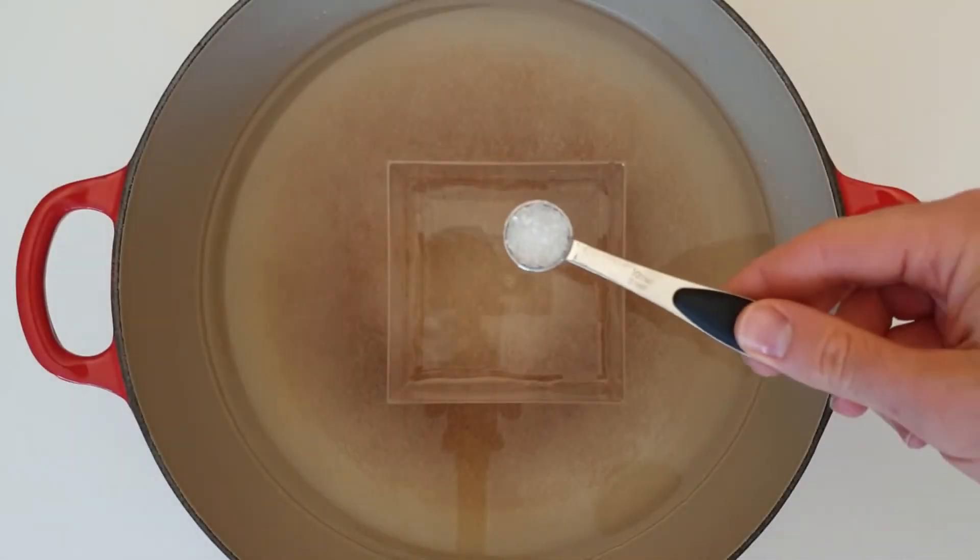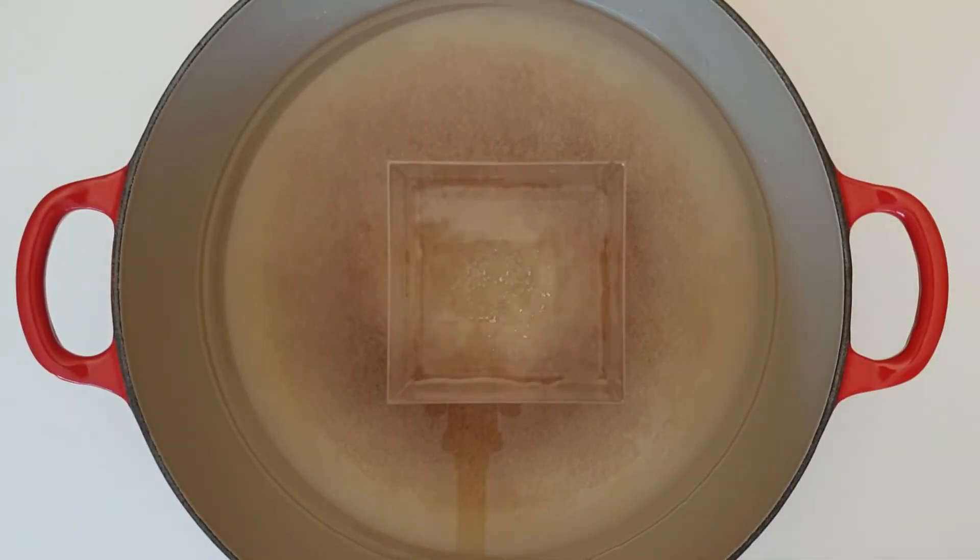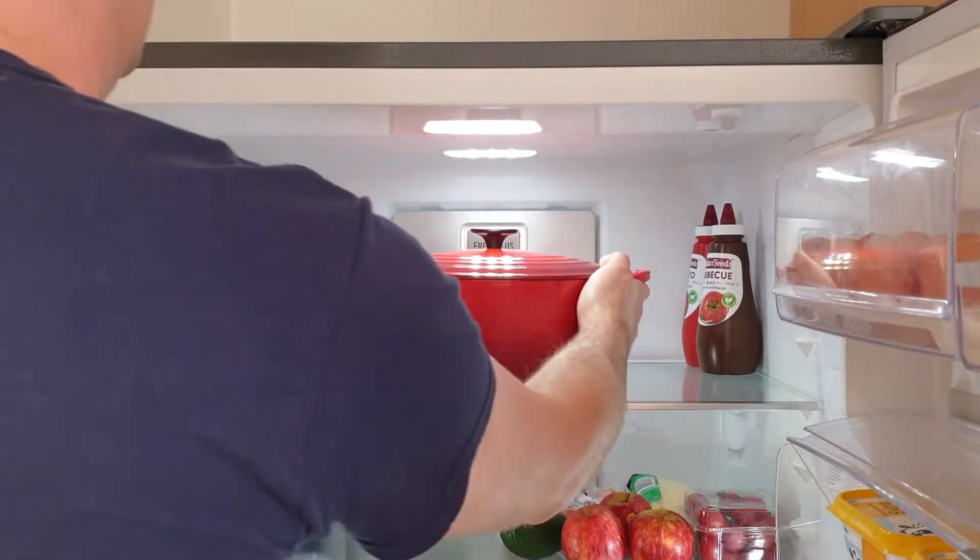The next morning, add a teaspoon of Epsom salt to the container. These will act as seed crystals. Then place the pot in the fridge, and leave it to cool for at least 8 hours.